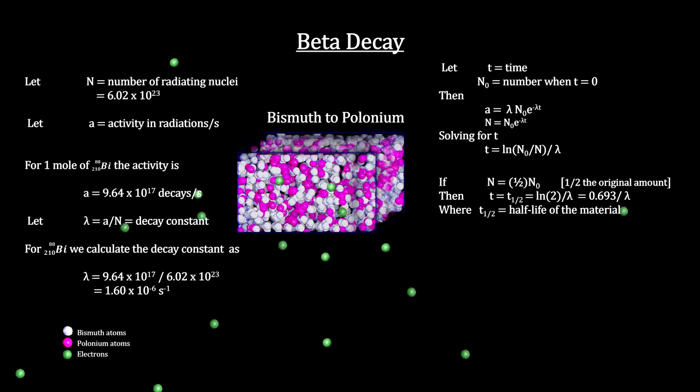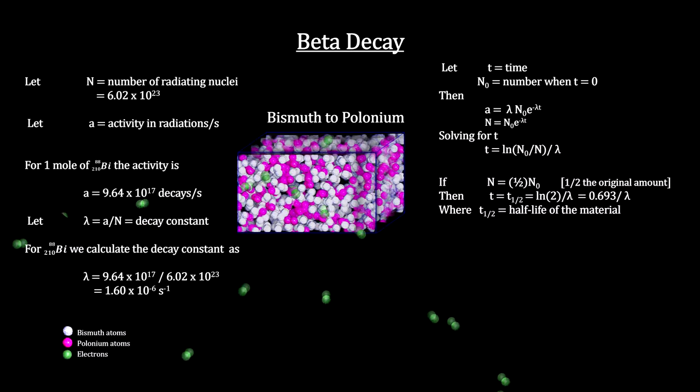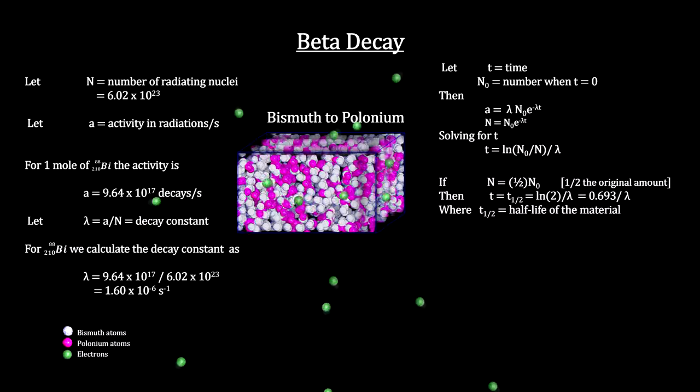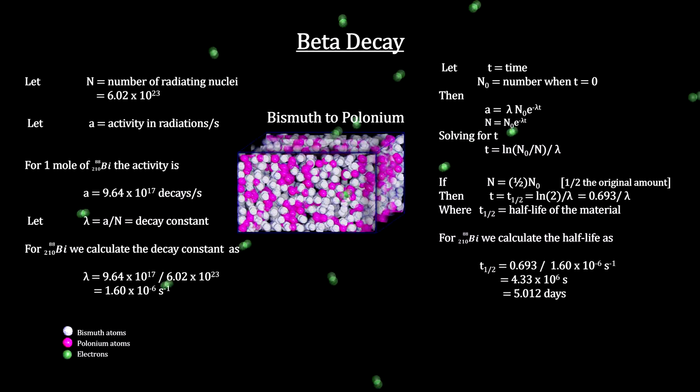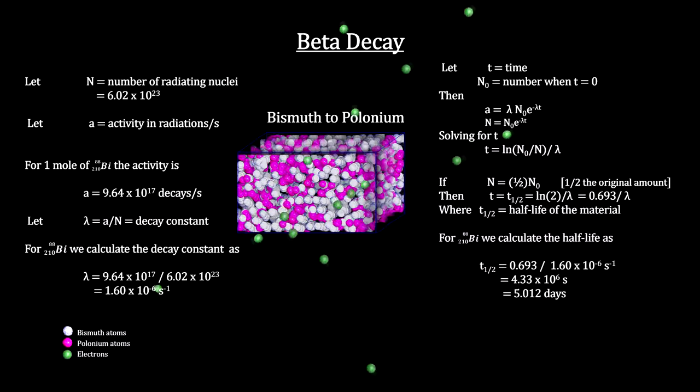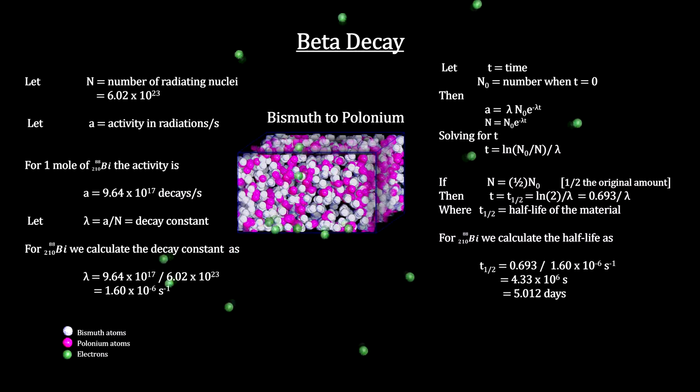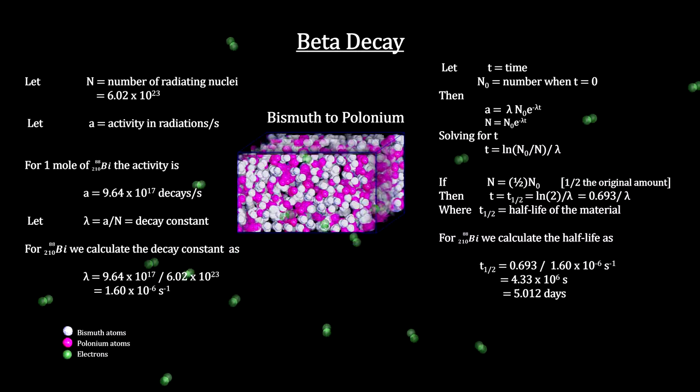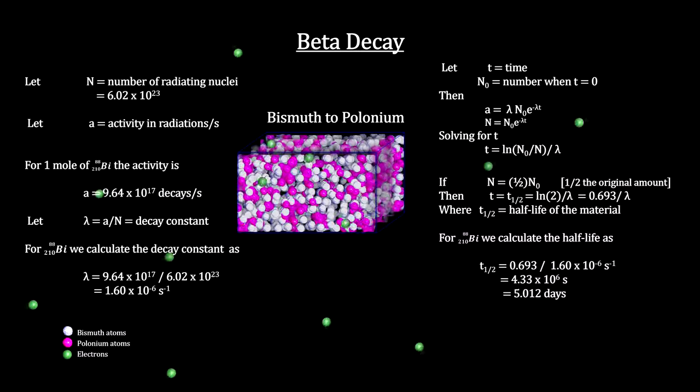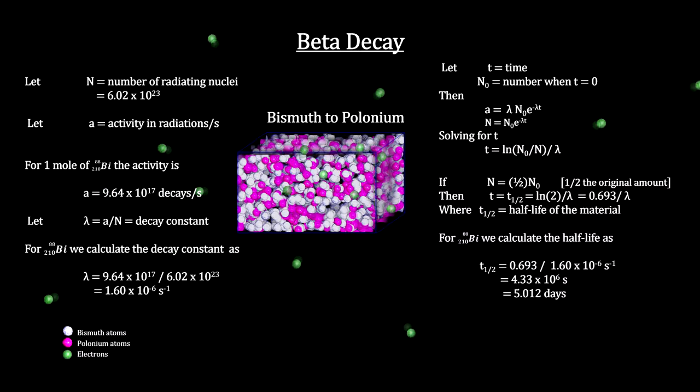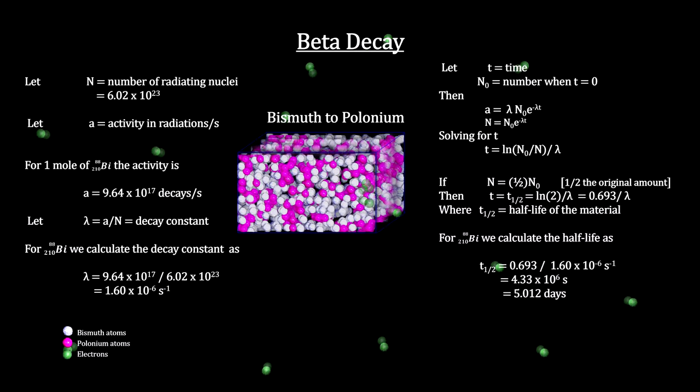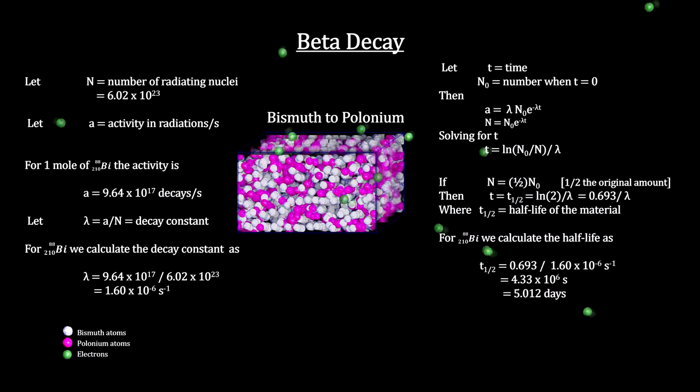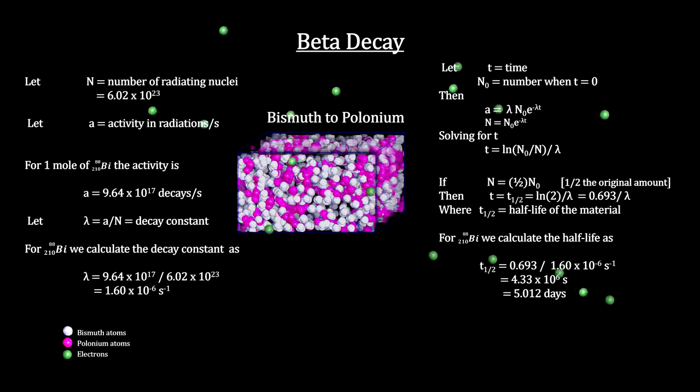The half-life is the time it takes for the material and activity to be reduced by half. Bismuth-210 has a half-life of five days, meaning it takes five days for half of any amount to transform into polonium. We cover half-life in more detail in the How Old is the Earth-Moon System segment in the How Old Is It video book.